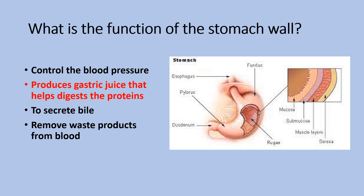The stomach wall helps to digest food. It contains glands that produce enzymes and acids. When the stomach wall squeezes the food, it helps to digest it and move it into the small intestine.